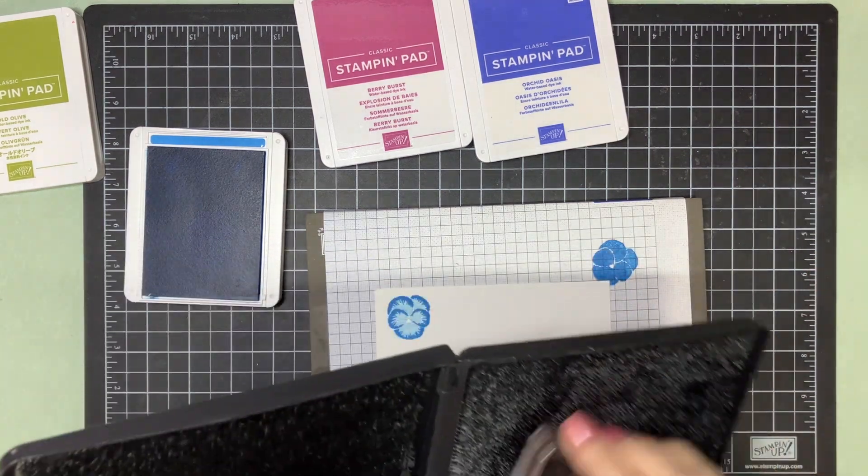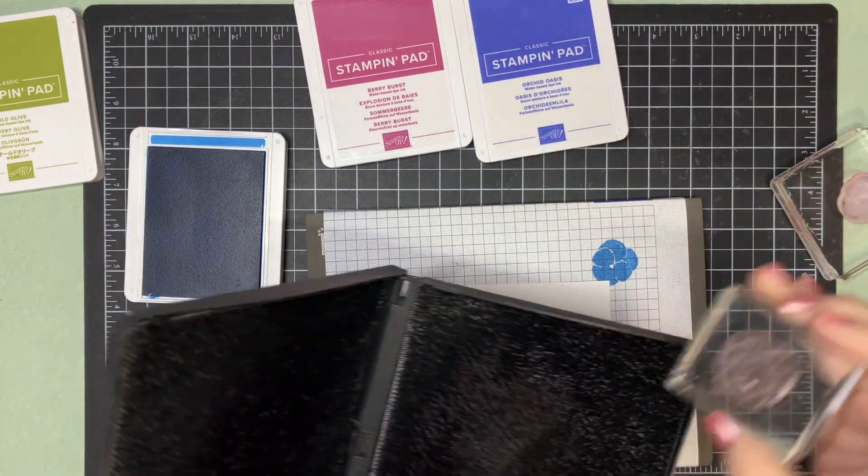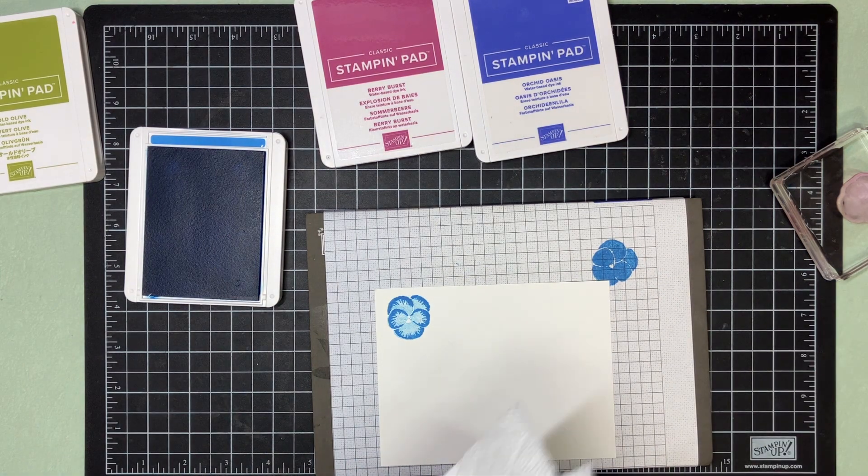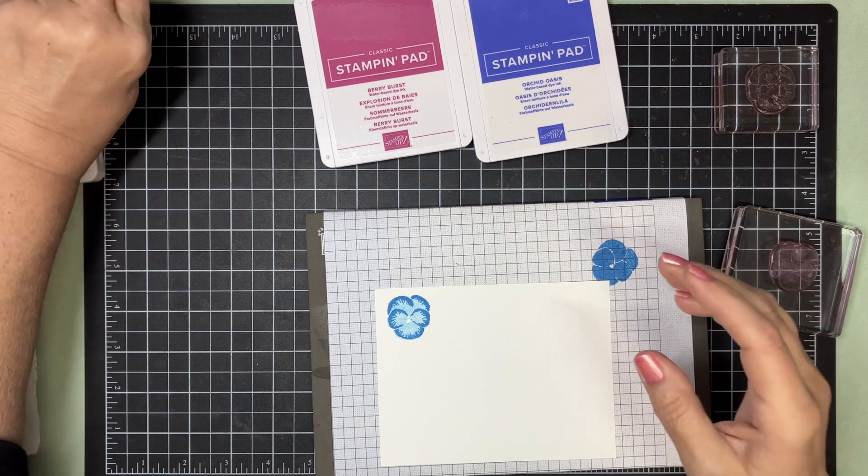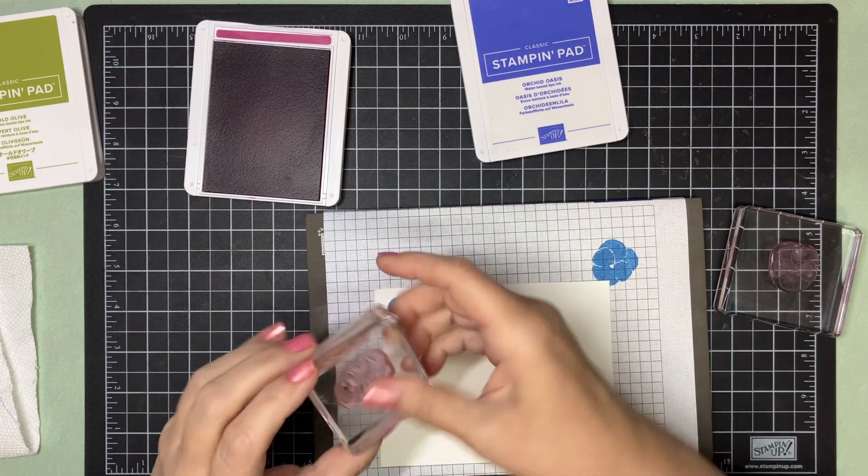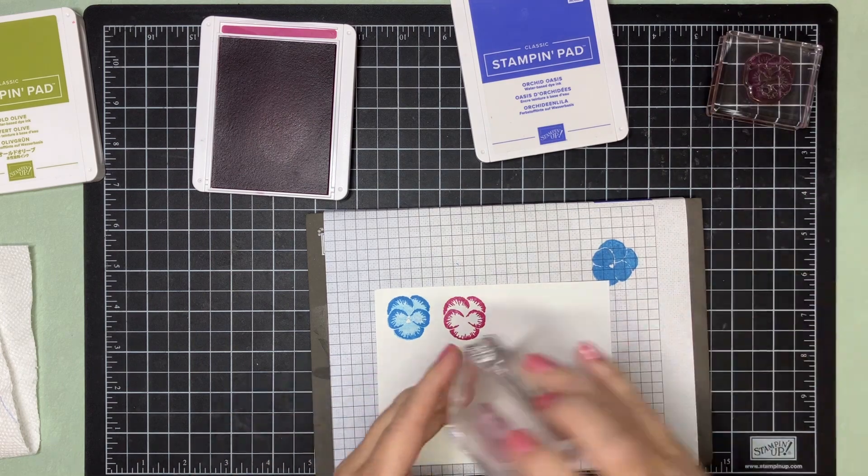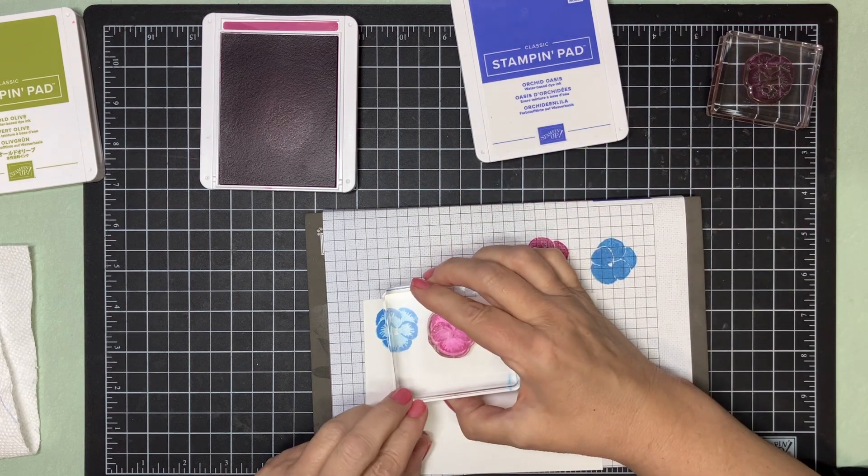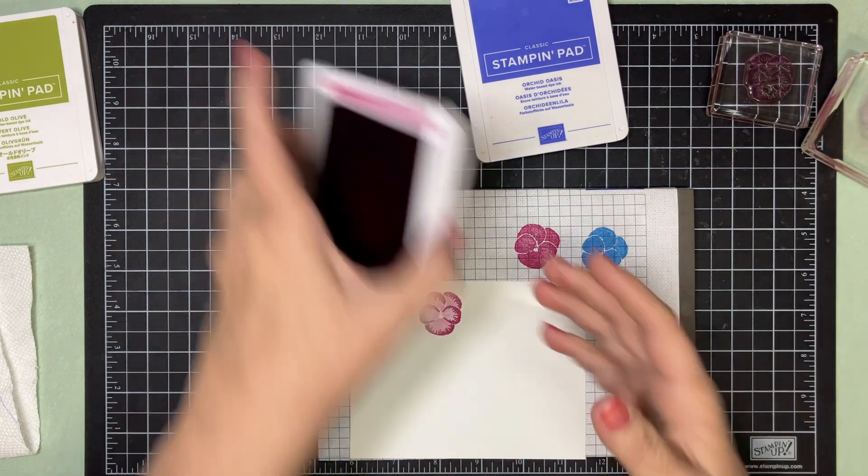Then we're going to do Berry Burst. We'll do the detailed and then these, I'm just doing by stamping off one. You could use multiple colors if you wanted, but I thought they looked very pretty this way.